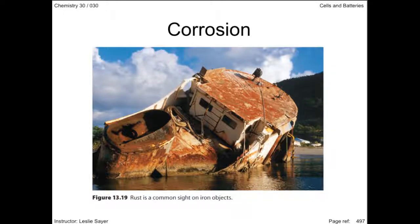Rusting is an example of corrosion. It's a redox reaction of metals with the oxygen in the air. It is generally considered an expensive problem when viewed against prevention, maintenance and replacement costs.